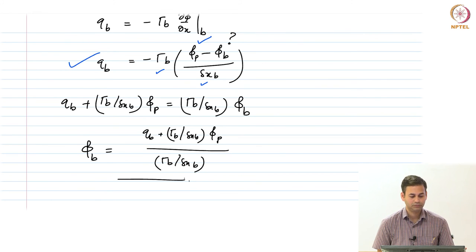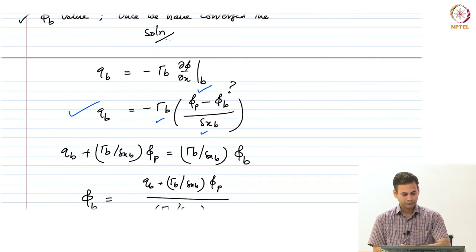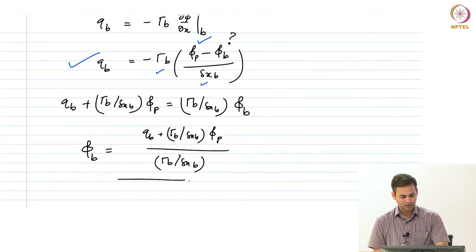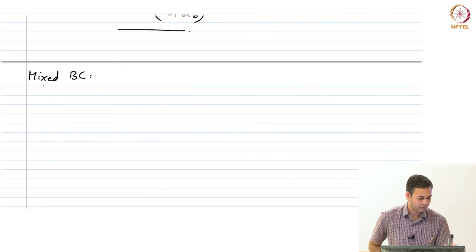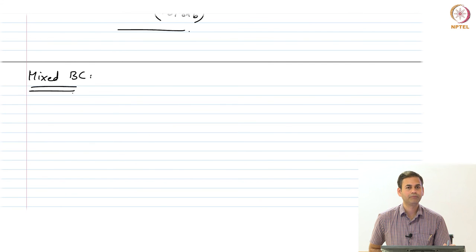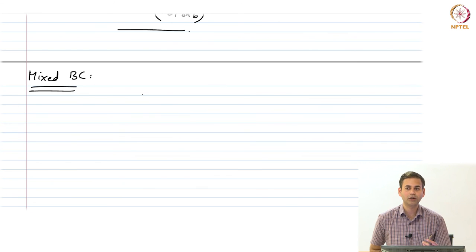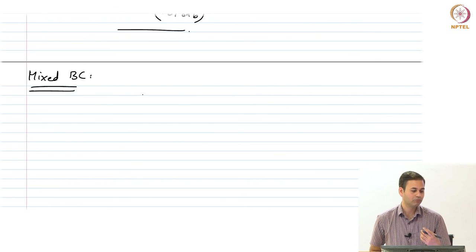We have covered Dirichlet and Neumann boundary conditions. The next one is the mixed boundary condition. What would be a typical physical application? For Dirichlet, you have a heater maintained at constant temperature. For Neumann, you have an insulated surface or applied heat flux.